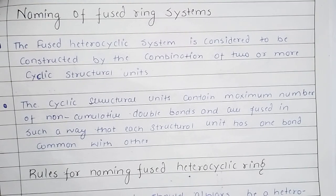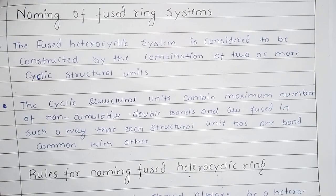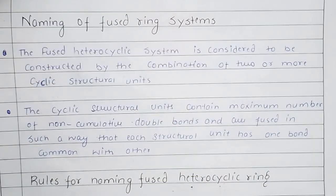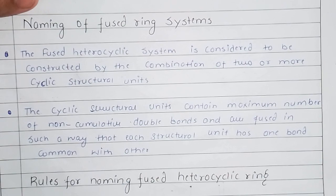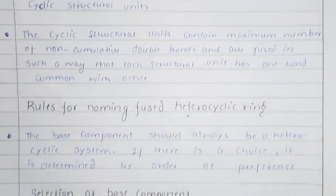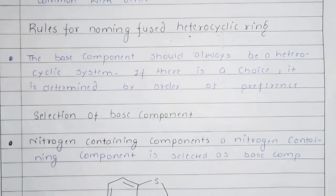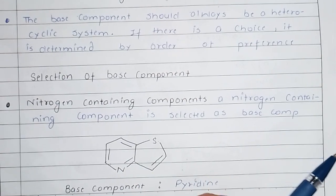Next we talk about rules. There are some rules for common names, and there are rules according to which we name fused ring systems. You should have two or more rings for a fused system. Let's read this definition: for naming fused heterocyclic rings, you need to identify what the base compound is and what the attachment compound is.